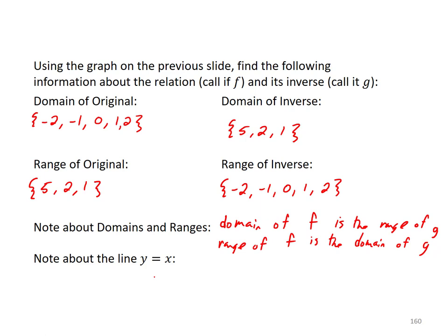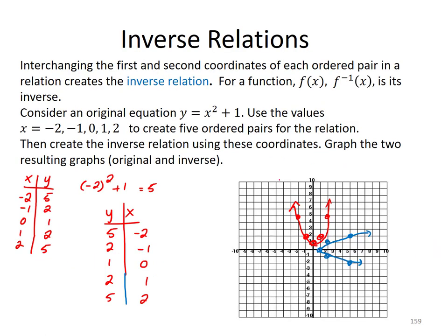Now, the line y equals x, you need to note something about that. These two graphs are a reflection across the line y equals x. We have symmetry.